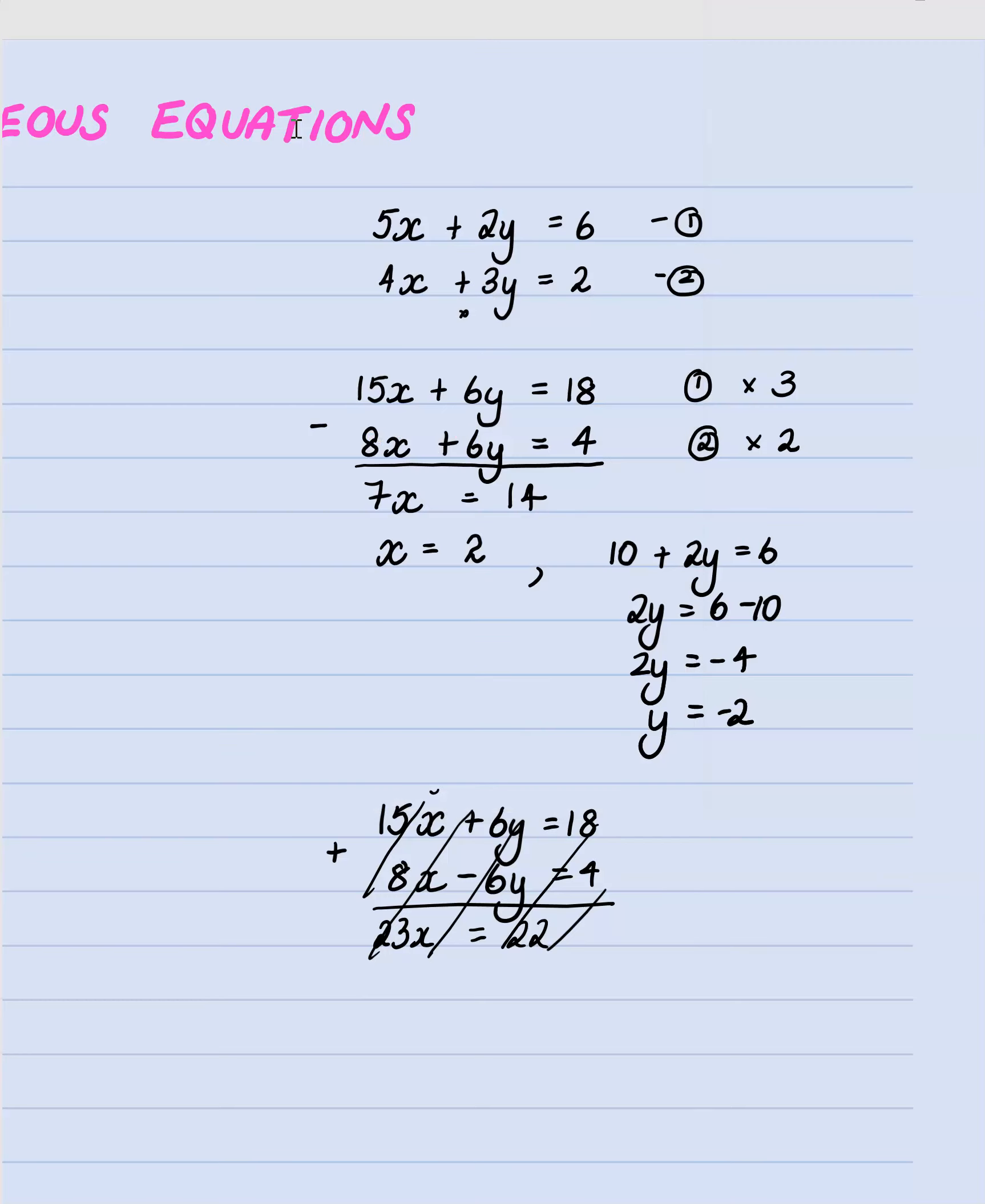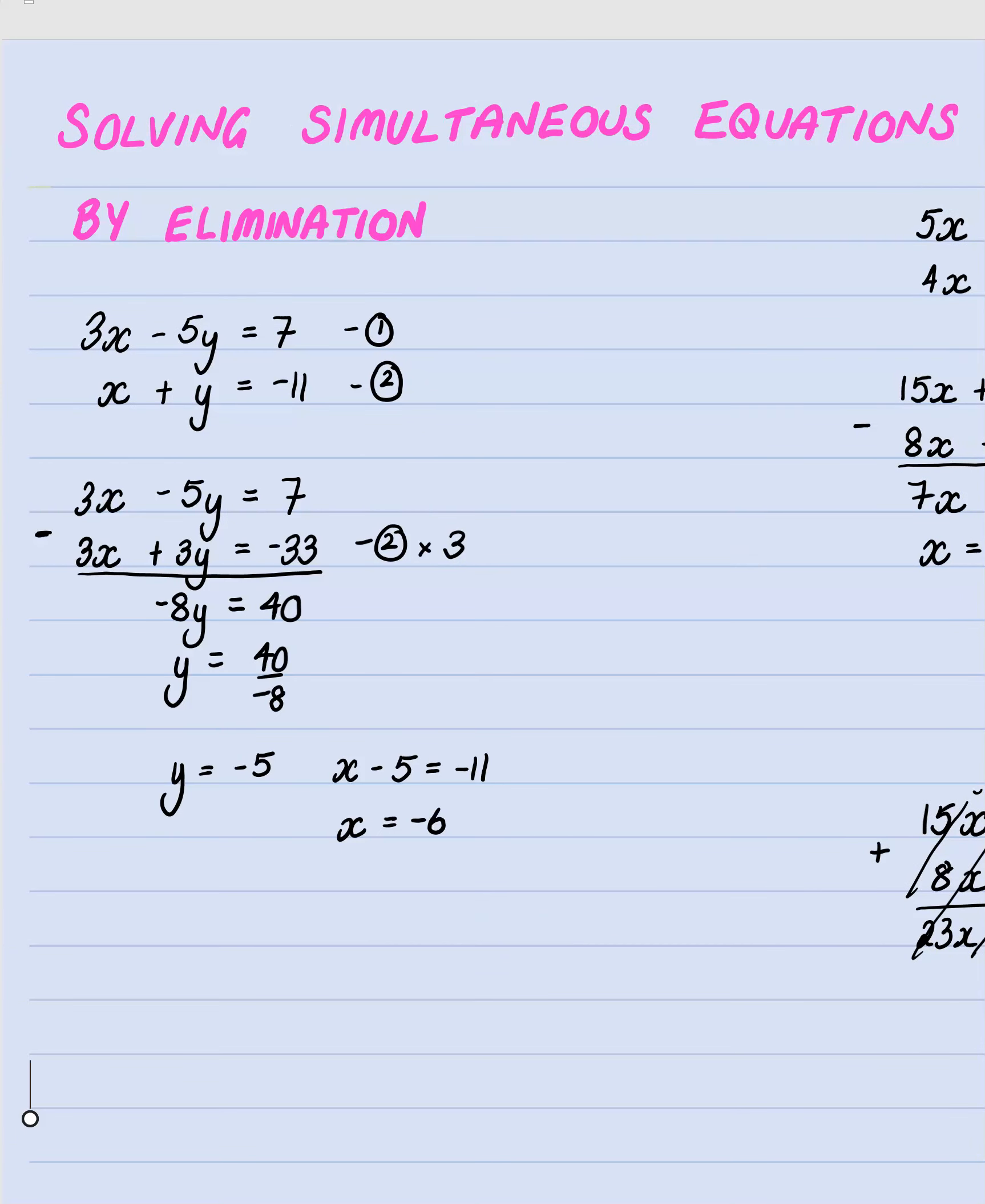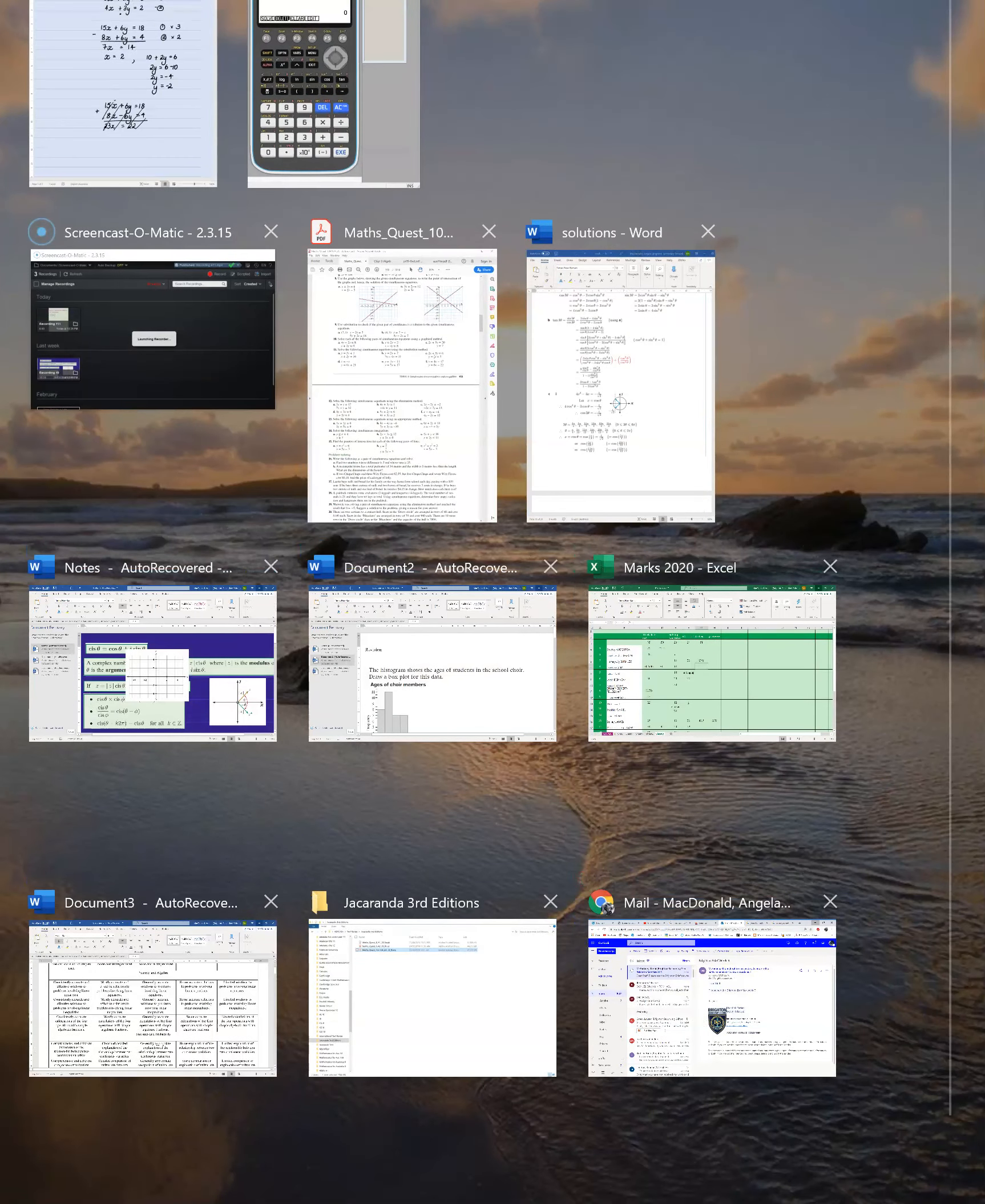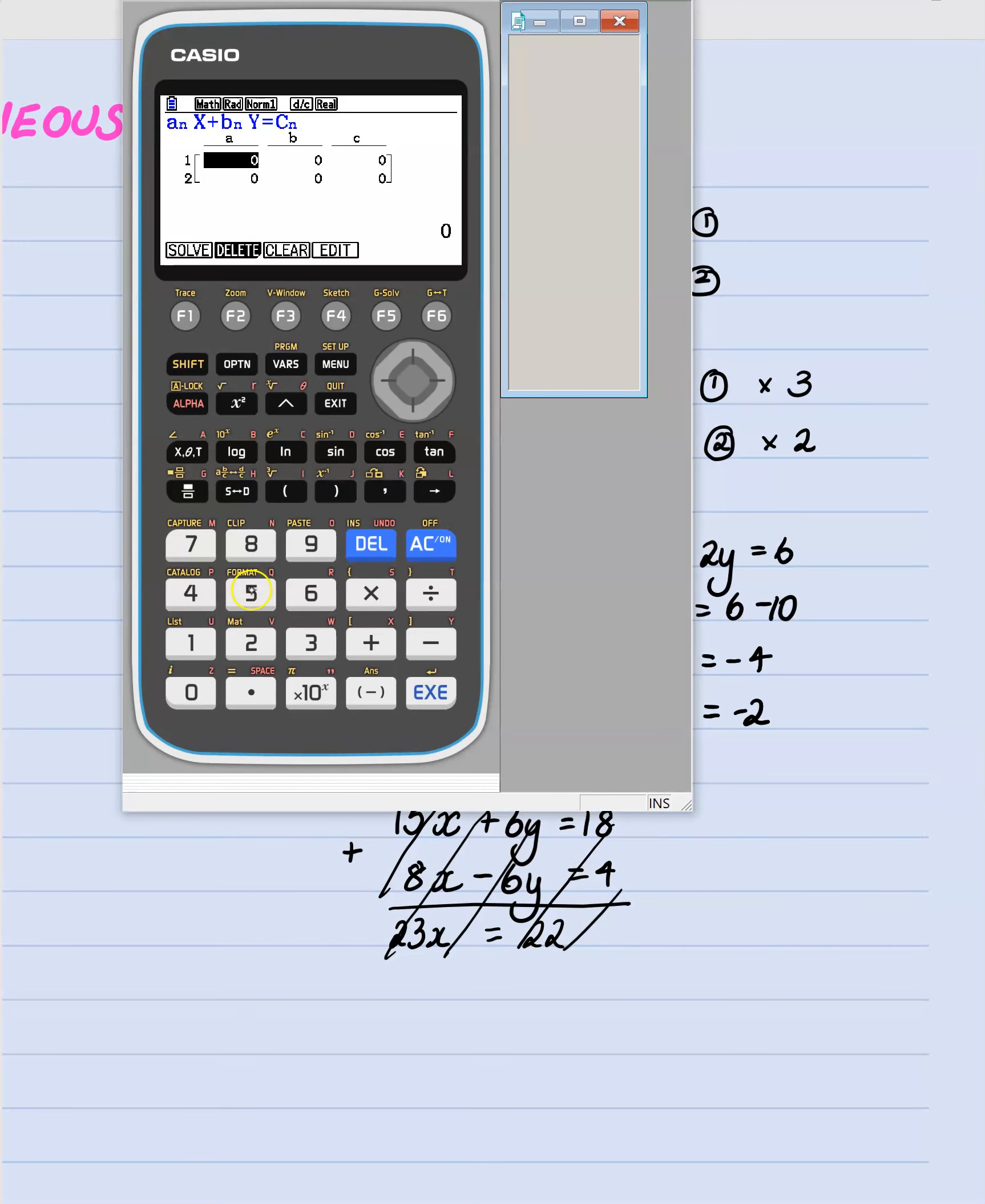So if I look at our first equation it was sorry about that it was 5 plus 2y equals 6. So 5, 2 and 6 is what we will pop in. And we just enter that in. 5, 2, 6.